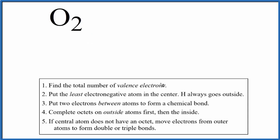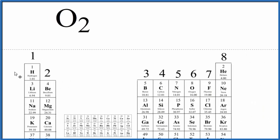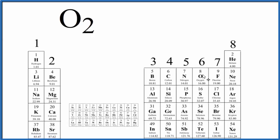So to draw the Lewis structure for O2, the first thing we do is count the total number of valence electrons. We look at the periodic table here and oxygen right here, group 16, sometimes called 6A, has six valence electrons.